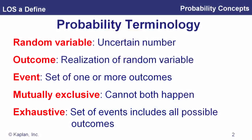Let's take a look at some probability concepts, starting off with some terminology. A random variable is just any uncertain number — for example, what's the return on the market tomorrow? It's a random variable; it's uncertain now. An outcome is the realization of a random variable, so at the end of trading tomorrow we'll know the return on the index. An event is a set of one or more outcomes, and we divide the possible outcomes into separate events.